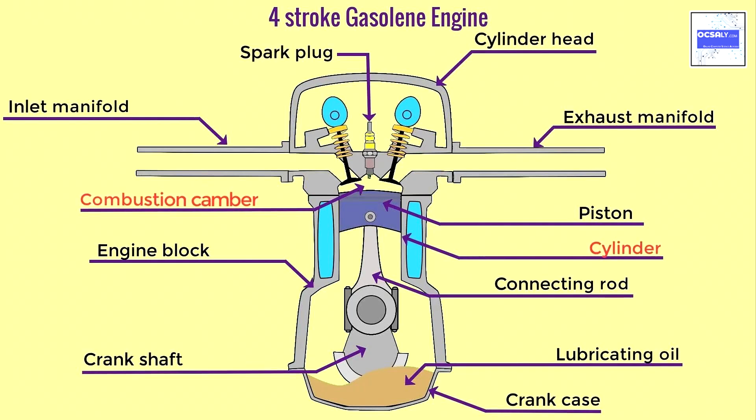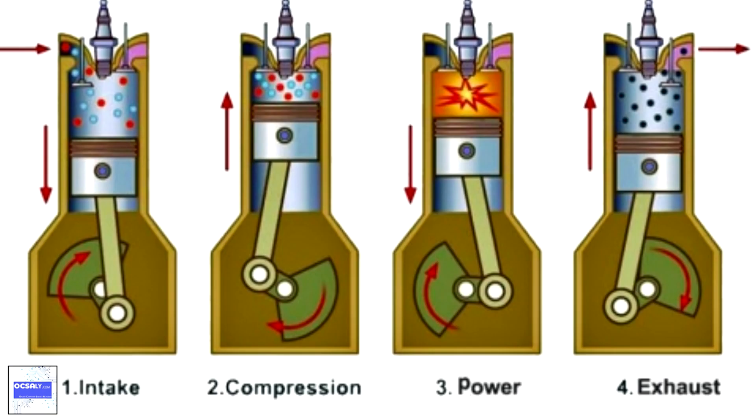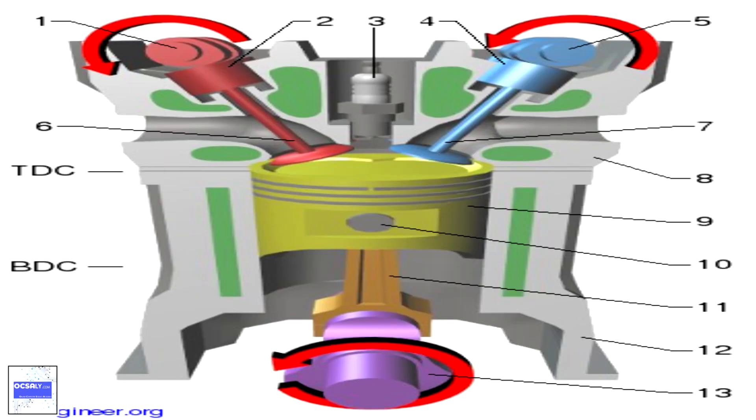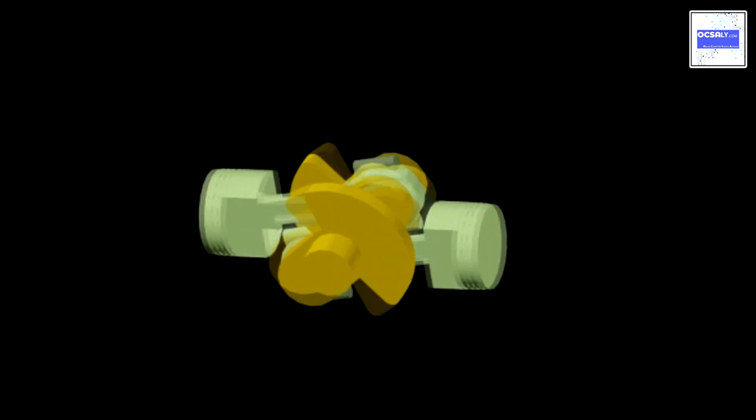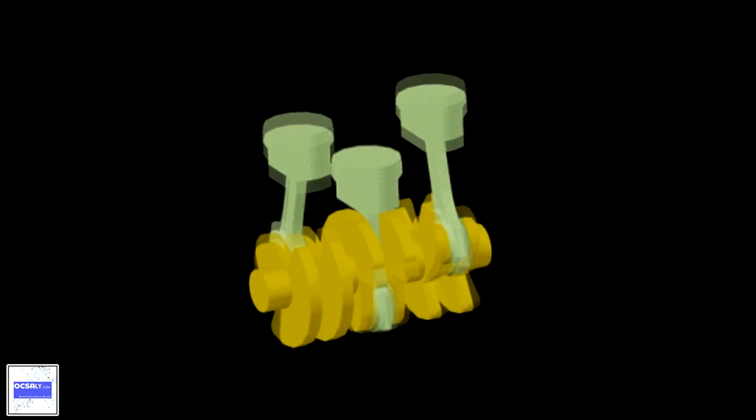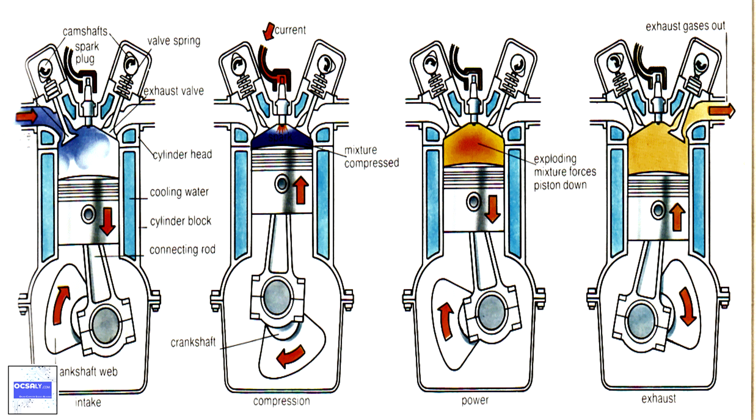These four strokes can also be referred to as suck, squeeze, bang, blow respectively, which can be easier to remember. Four-stroke engines are the most common internal combustion engine designed for motorized vehicles, being used in automobiles, trucks, light aircraft, and motorcycles. The major alternative design is the two-stroke cycle.